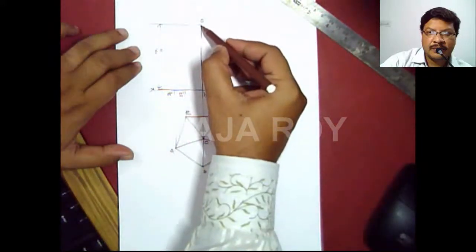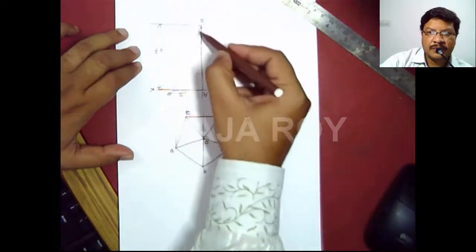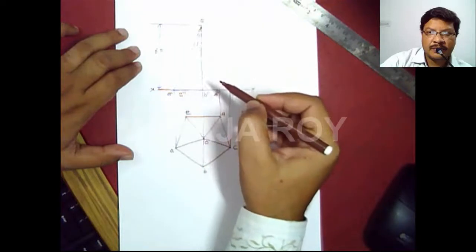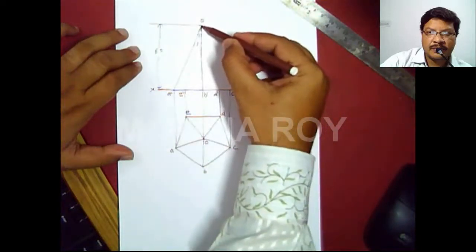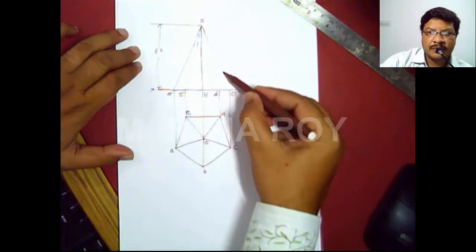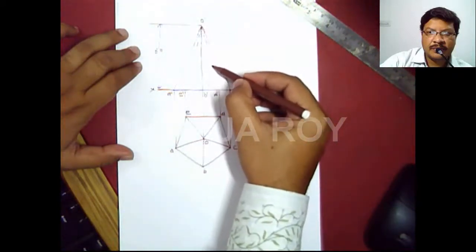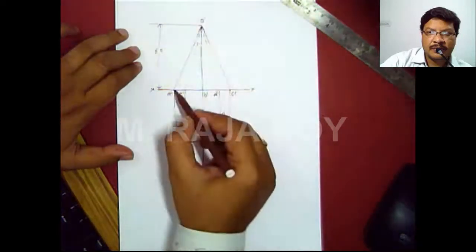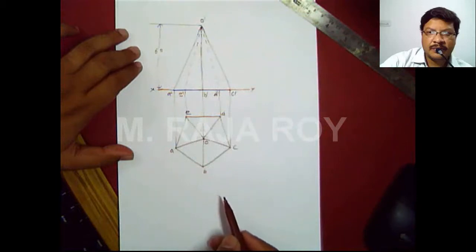This is another slanted edge O'A'. O'D' is invisible and will be represented with a dashed line. O'C' is visible. O'E' is again invisible and will be represented with a dashed line. This is the base. Now the projections of the solid are complete.